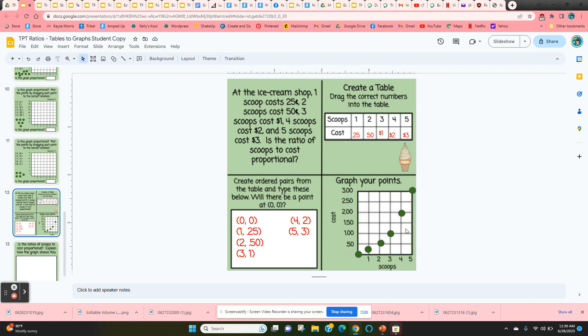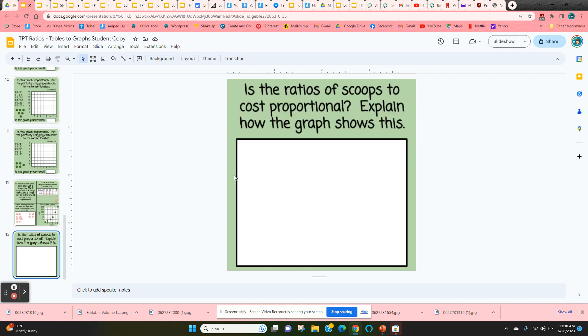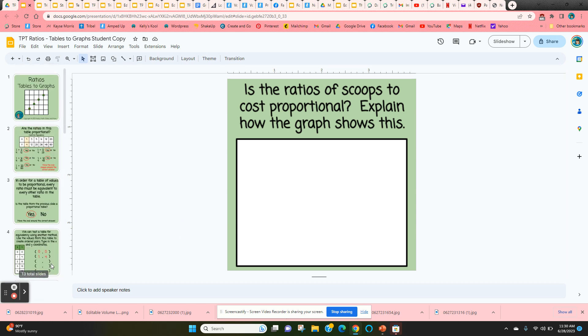So they can see from this graph that it's not a straight line. Does go through the origin, but it's not a straight line. So they're going to explain on the next, last slide what they discovered. Is this a proportional graph, and why, and how can they tell by looking at the graph? Okay, so that is a lesson on ratios, tables to graphs digital.